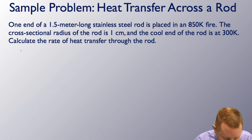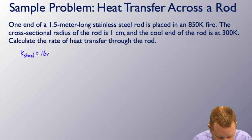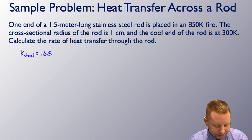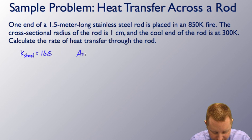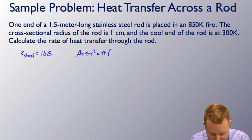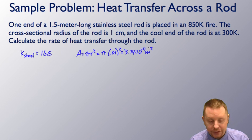Well, again, we have to start off by looking up the thermal conductivity of steel, and we're going to use a value of about 16.5. We also need to know the cross-sectional area. Well, area is pi r squared, so that's going to be pi times our radius, 1 centimeter or 0.01 meter squared, which is going to give us 3.14 times 10 to the minus 4 square meters.